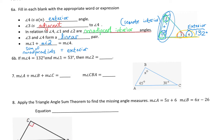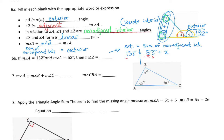I know that the exterior angle is equal to the sum of the non-adjacent interiors, or the remote interiors, depending on who your teacher is. The exterior angle is 132 degrees. The non-adjacents are angle 2 and angle 1, and angle 1 is 53 degrees. So 132 equals 53 plus X. Subtract 53 on both sides, and X equals 132 minus 53, which is 79 degrees.